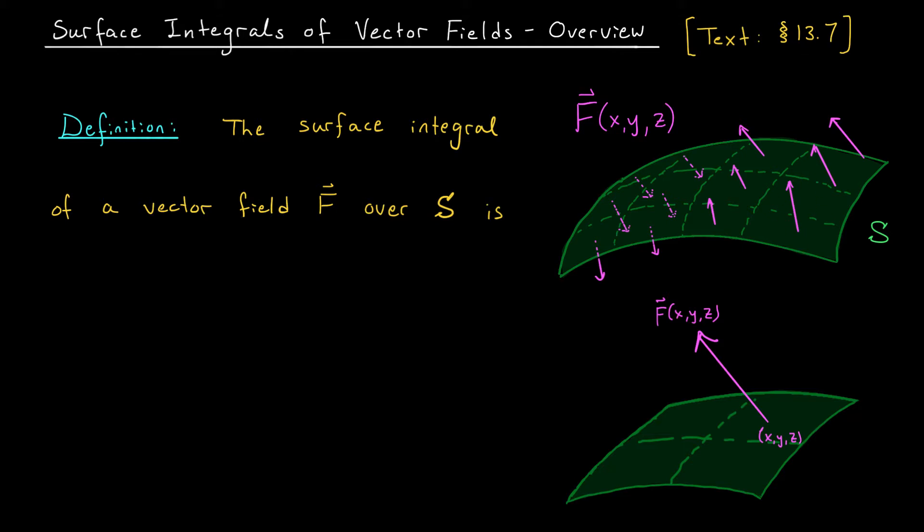Now to understand what it would mean to integrate this vector field over a surface, it'll be helpful to think of F as modeling some type of fluid flow. Maybe F represents the velocity of air as it circulates throughout some three-dimensional room, or maybe it represents the velocity of water as it circulates throughout some tank.